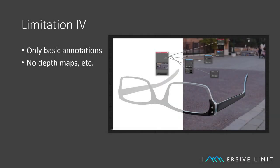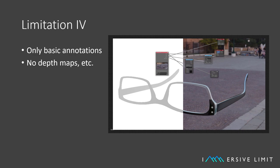Limitation number four: they only have basic annotations. If you need anything advanced, like a depth map, or maybe a heat map, or object pose, generally you're completely on your own. They contain things like bounding boxes and segmentation, and maybe a label that describes the whole image.